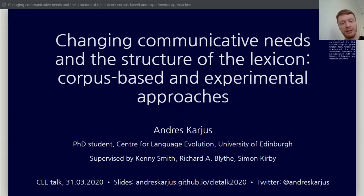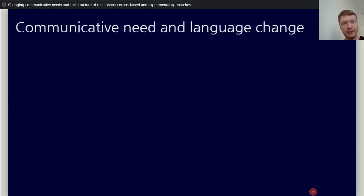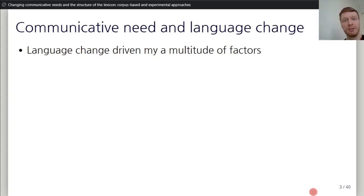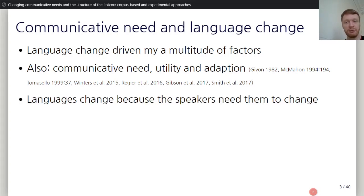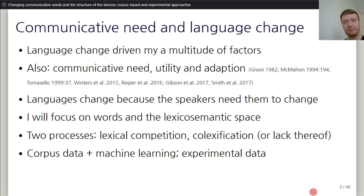The slides for this talk are online, and if you have any questions feel free to email me or ask on Twitter. All languages change over time — that's one universal thing about all natural living languages. One reason is communicative need; languages change because speakers need them to change, to remain efficient tools of communication. I'll be focusing on words and the semantic space, specifically two processes: lexical competition and co-lexification, using corpus data supported by machine learning and some experimental work.